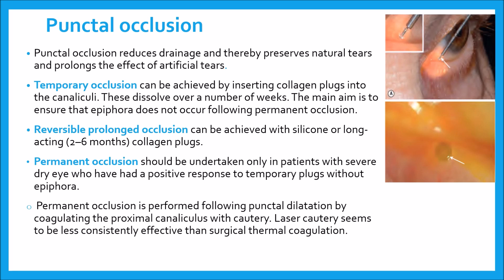The main aim is to ensure that epiphora does not occur following permanent occlusion. Initially, the inferior puncta are occluded and the patient is reviewed after one to two weeks. If the patient is now asymptomatic and without epiphora, the plugs can be removed and the inferior canaliculus permanently occluded. In severe keratoconjunctivitis sicca, both the inferior and superior canaliculi can be plugged.